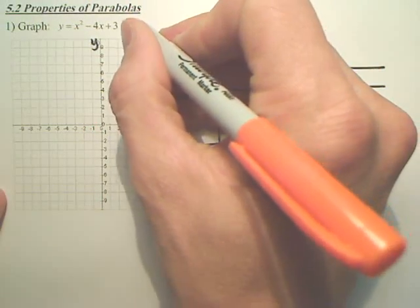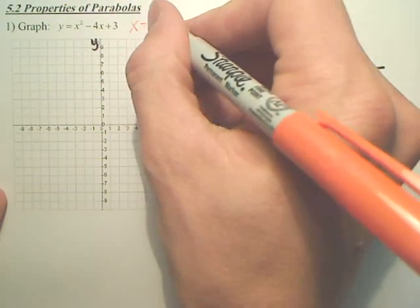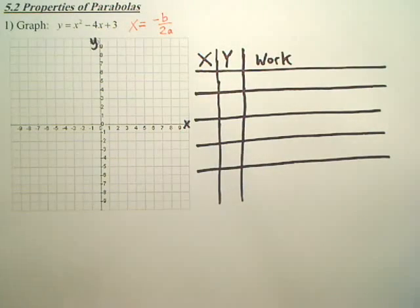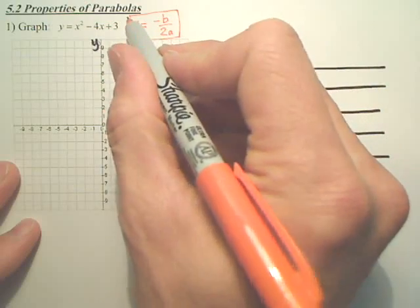Now, to find the line of symmetry for a parabola, you need this formula. x equals negative b over 2a. That is a very important formula.